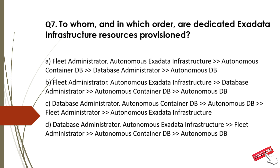Choosing between Options A and B — Option A: Flat Administrator → Autonomous Exadata Infrastructure → Autonomous Container DB → Database Administrator → Autonomous DB. This matches what's in Oracle documentation, so this is correct. Option B: Flat Administrator → Autonomous Exadata Infrastructure → Database Administrator → Autonomous Container DB → Autonomous DB. The steps are not in the correct order, so this is incorrect. The correct option for Question 7 is Option A.